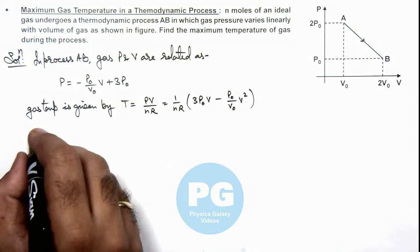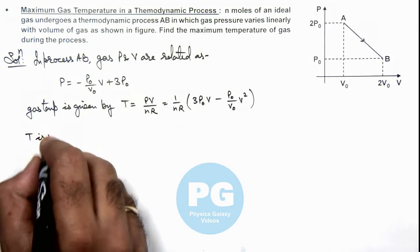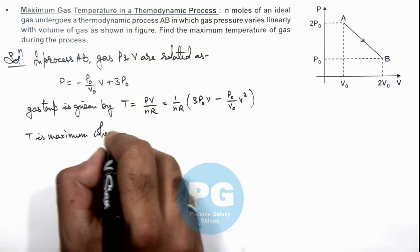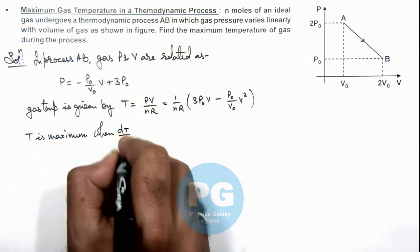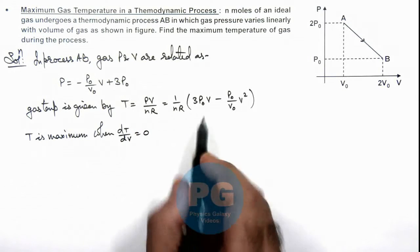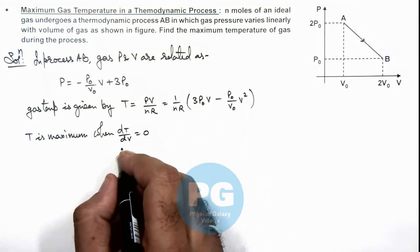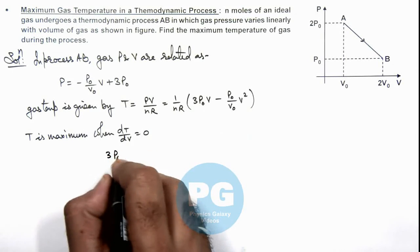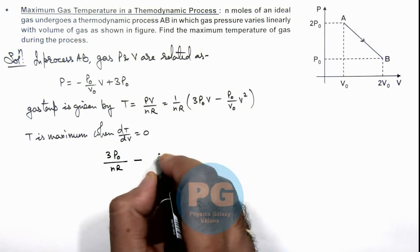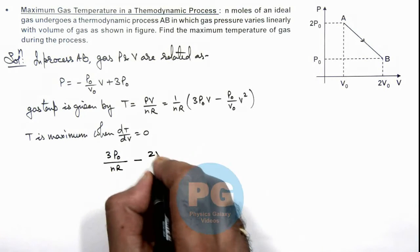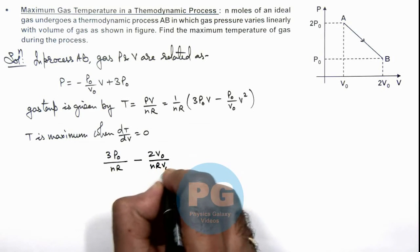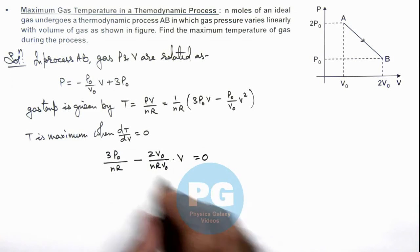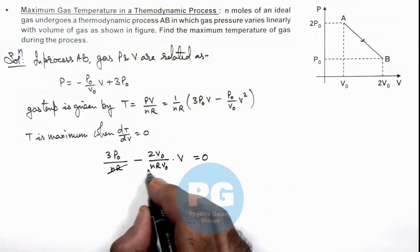We are required to find maximum temperature, so T is maximum when dT/dV equals zero. Differentiating this expression, we get 3P₀ divided by nR minus 2P₀ upon nR V₀ multiplied by V, and this should equal zero. Using this maxima-minima condition, nR gets cancelled out.